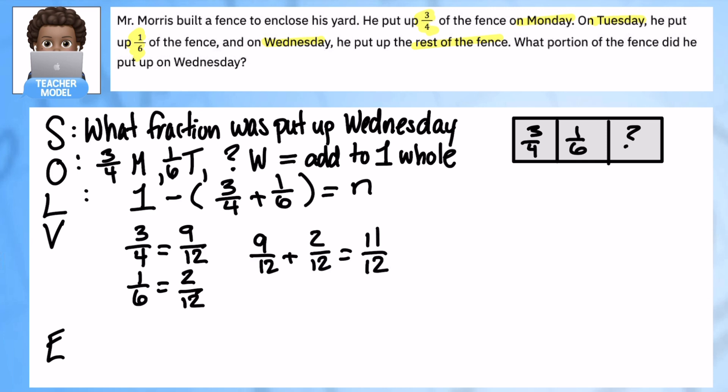And now I can do my final part, one minus eleven twelfths. Now my one has to be a fraction, so obviously what fraction am I going to choose? Twelve over twelve. We're going to choose that one so it's the same denominator, and I can subtract it, and I get one twelfth.